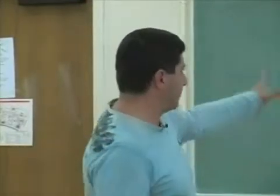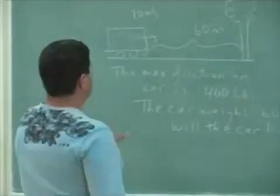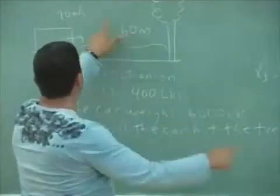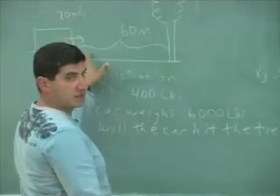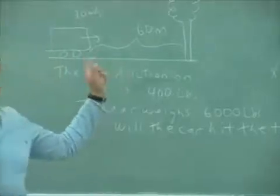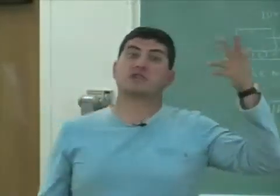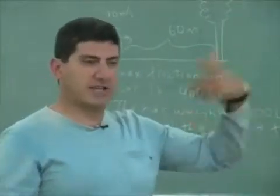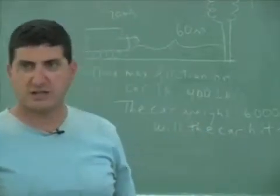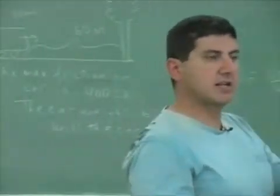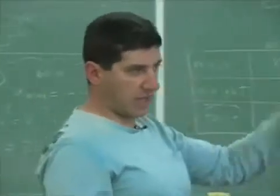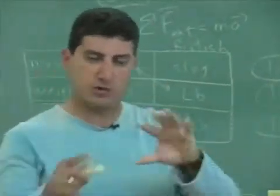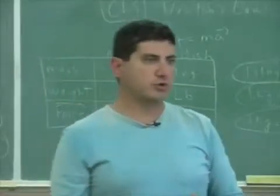The car weighs 6,000 pounds. Will the car hit the tree? Notice that the kinds of questions and information given here are not the same as before. 60 meters, same as before. 20 meters per second, same as before. But what's missing in this problem? It didn't give you the acceleration A. You're supposed to calculate the A. Once you calculate the A, you can answer the question using kinematics. That's what dynamics means — dynamics allows you to calculate the A, and then you can use what you know from kinematics.